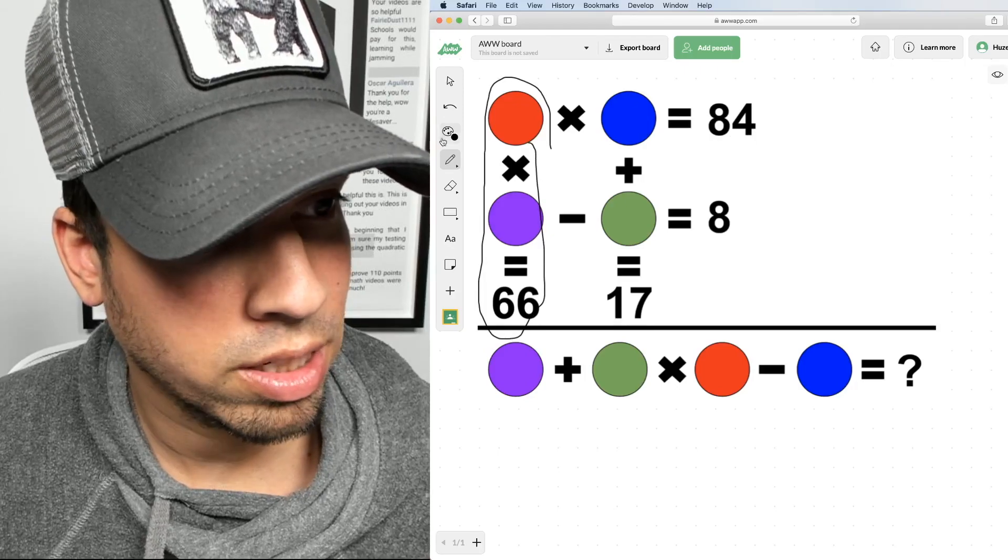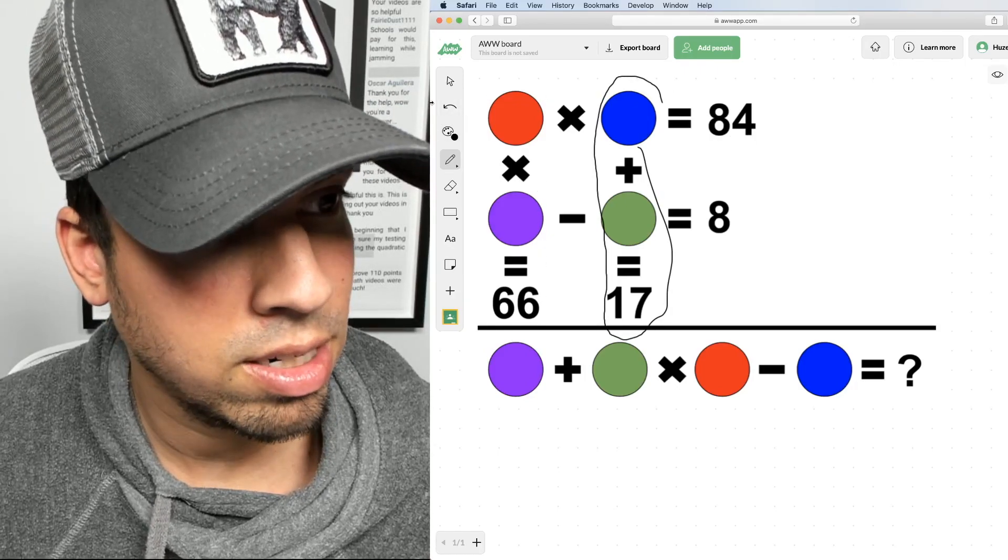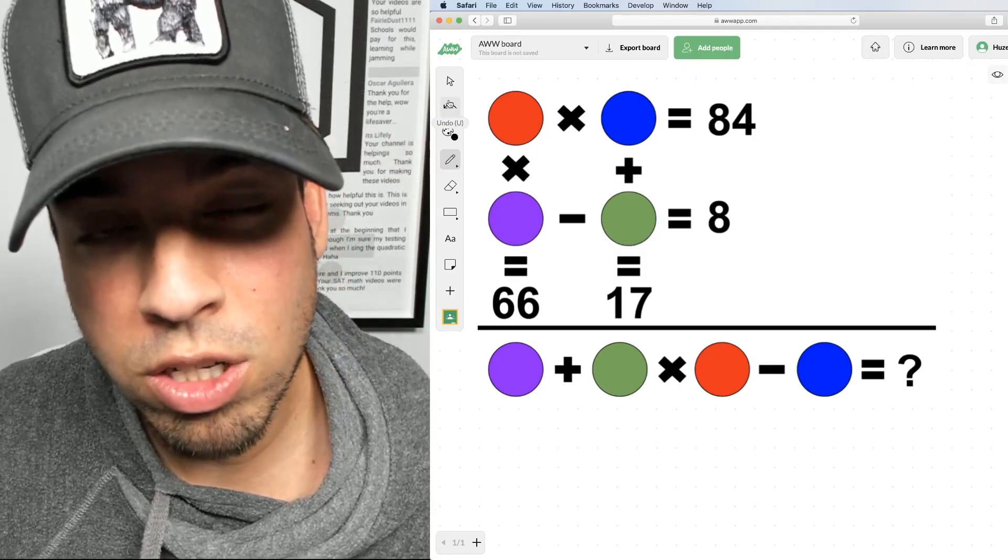We've got on the top row the red times the blue equals 84. We've got the red times the purple equals 66. We've got the blue plus the green equals 17. And then of course, last but not least, we got the purple minus that green equals 8.